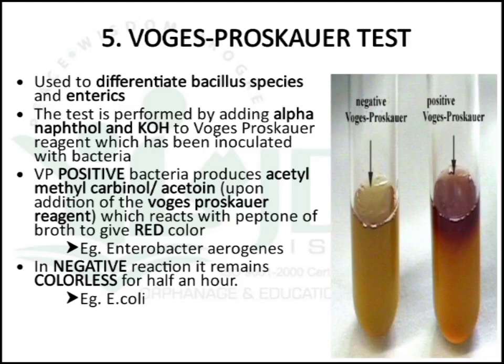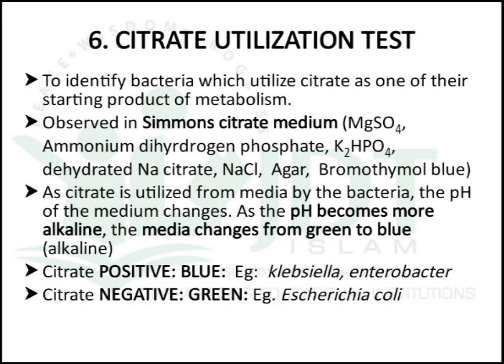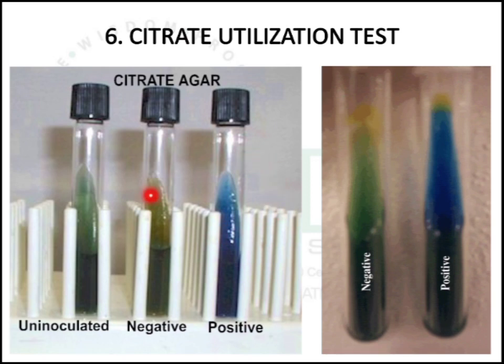The next test is the citrate utilization test, used to identify bacteria that utilize citrate as a starting product of metabolism. It is observed in Simmons citrate media, which consists of magnesium sulfate, ammonium dihydrogen phosphate, dehydrated sodium citrate, sodium chloride, agar, and bromothymol blue. As citrate is utilized by bacteria, the pH becomes more alkaline, and the media changes from green to blue. A positive citrate test gives blue color; a negative test gives green color. Example of a positive organism: Klebsiella and Enterobacter.